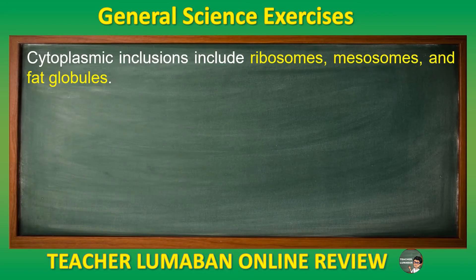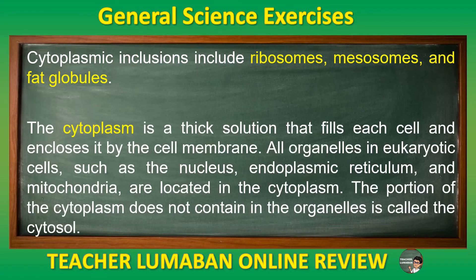Cytoplasmic inclusions include ribosomes, mesosomes, and fat globules. The cytoplasm is a thick solution that fills each cell and is enclosed by the cell membrane. All organelles in eukaryotic cells, such as the nucleus, endoplasmic reticulum, and mitochondria, are located in the cytoplasm. The portion of the cytoplasm that does not contain organelles is called the cytosol.